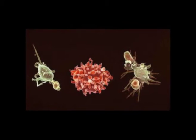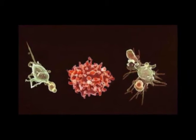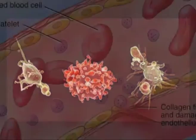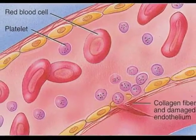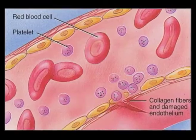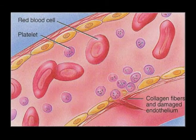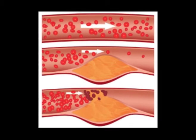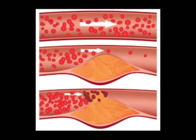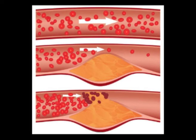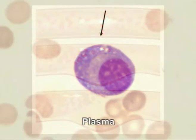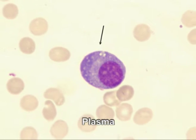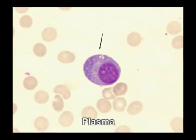Platelets, or thrombocytes, are cell fragments without nuclei that work with blood clotting chemicals at the site of wounds. They do this by adhering to the walls of the blood vessels, thereby plugging ruptures in the vascular wall. They can also release coagulating chemicals which cause clots to form in the blood, which can plug up narrowed blood vessels.